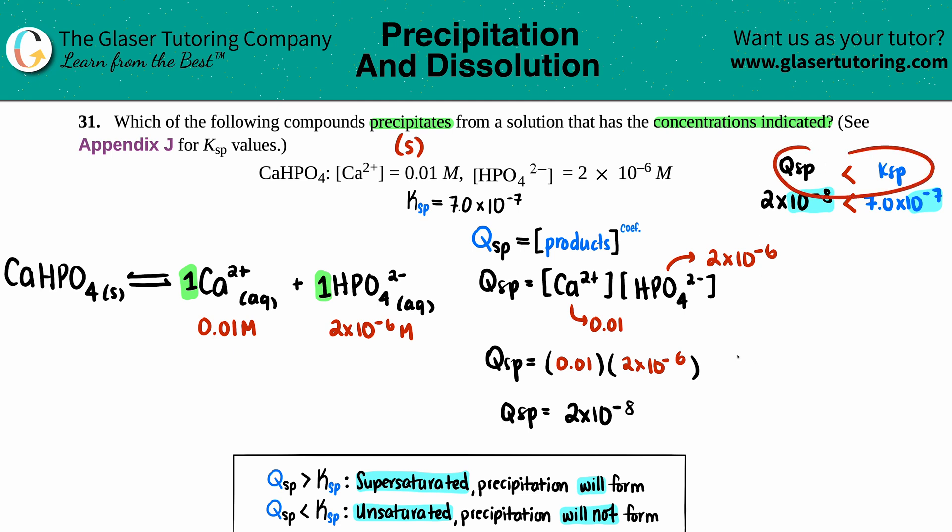Since we have a Qsp less than the Ksp, we are in an unsaturated solution and a precipitate will not form. So there will be no remaining solid precipitate in this solution, which means it will all dissolve. No precipitate.